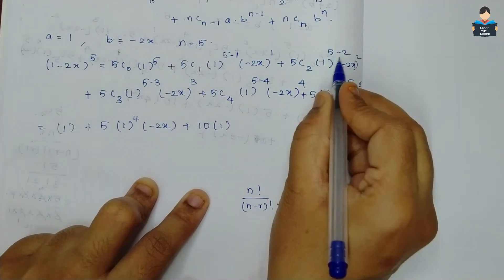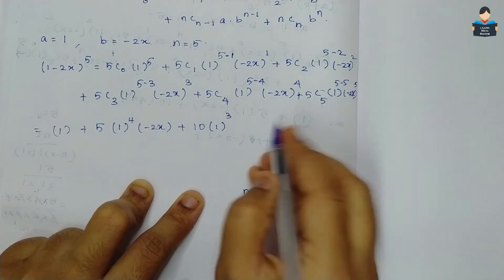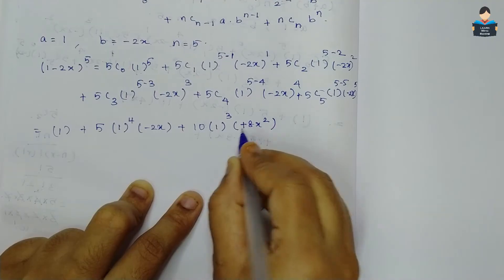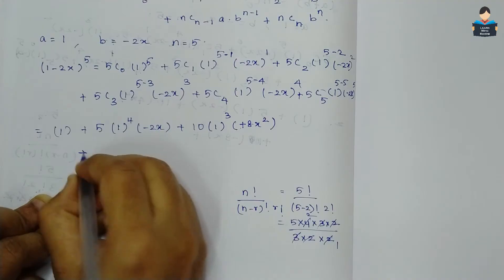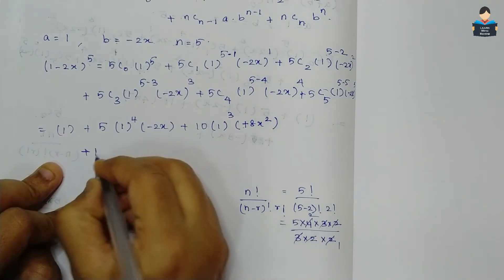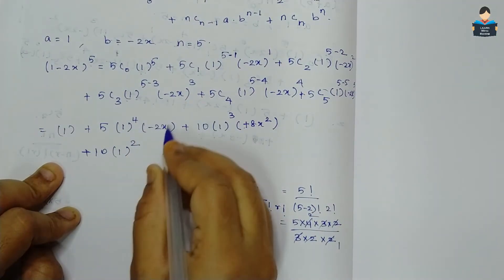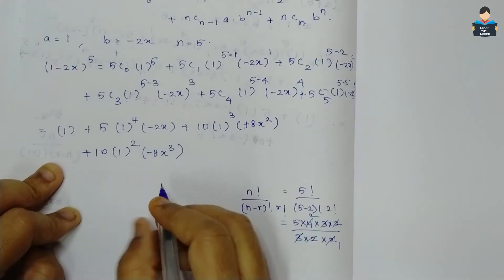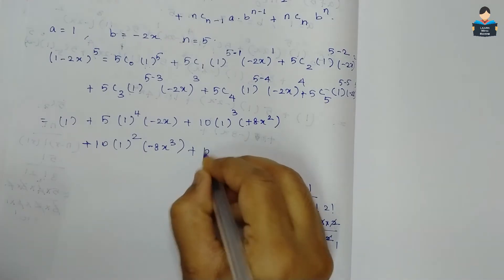So 10·1^3·(-2x)^2 = 10·(-8x^2) gives -80x^2? Wait — (-2x)^2 = 4x^2, so this term is 10·4x^2 = 40x^2. Next, 5C3 = 10, and (-2x)^3 = -8x^3, so that term gives -80x^3.